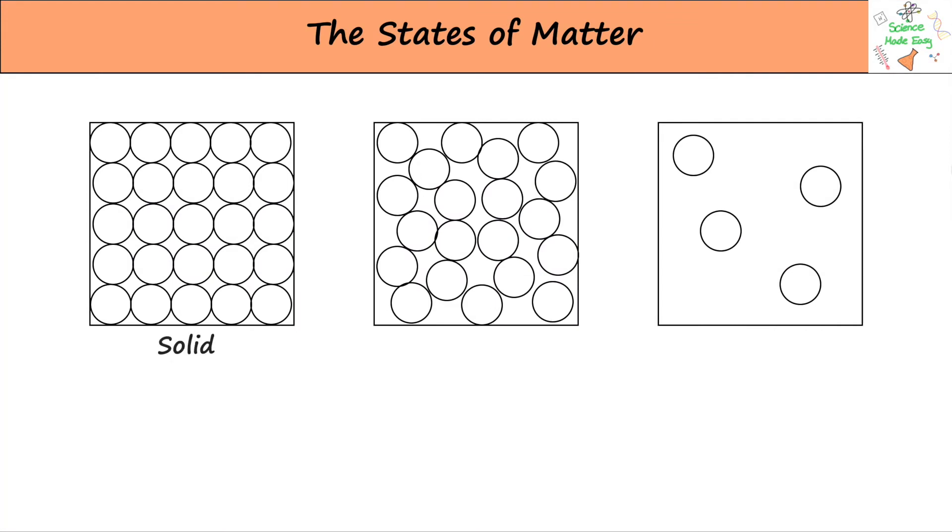So there are three states of matter. Solids have a fixed lattice, which means they have a set shape or pattern. They have very strong forces of attraction, meaning the particles are attracted to each other. They have a low amount of energy, meaning the particles can only vibrate and slightly move.